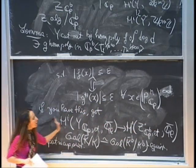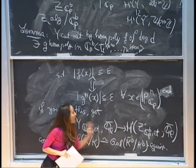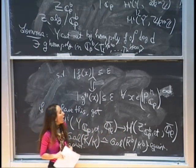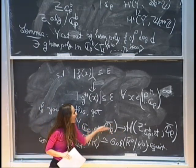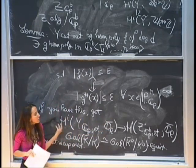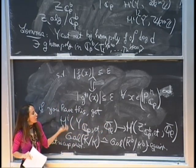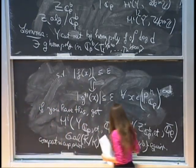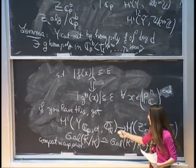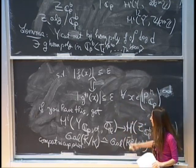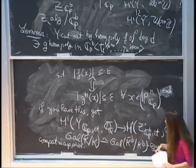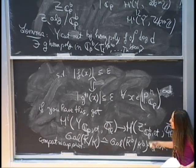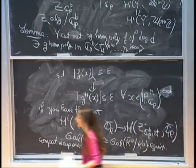Once you have such a map, as long as you can show that H^i(Y) is a direct summand of H^i(Z), you get that H^i(Y) must also satisfy the weight monodromy conjecture, since N is uniquely determined by the weights. This can be done using Poincaré duality.